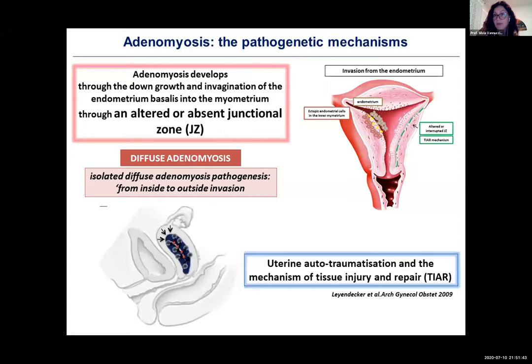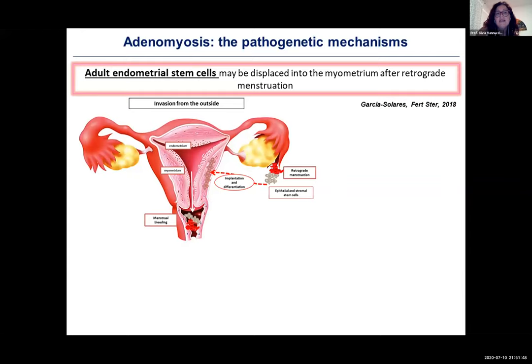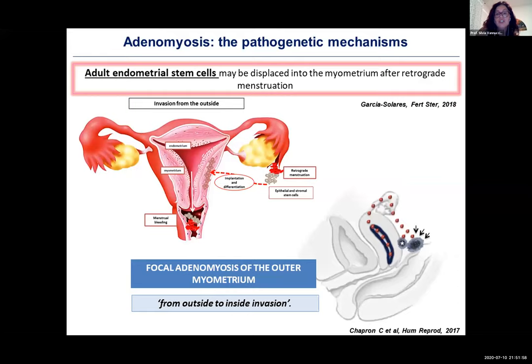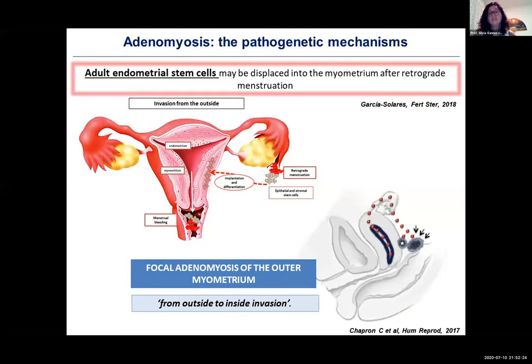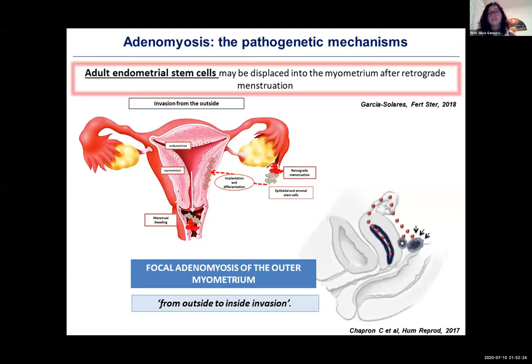Regarding stem cells, adult endometrial stem cells may be displaced into the myometrium after menstruation. The theory by Chapron describes a specific phenotype — focal adenomyosis of the outer myometrium — where endometriotic cells migrate into the myometrium from outside to inside, the opposite direction. About the stem cell theory, embryonic or adult stem cells may undergo metaplasia into the myometrium, creating an adenomyosis focus.